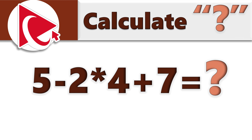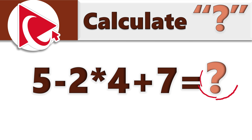You are presented with the very simple expression: 5 minus 2 multiplied by 4 plus 7 equals question mark. The question mark is the value that you need to calculate.